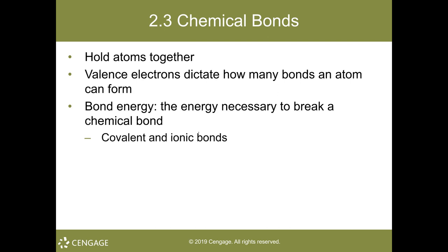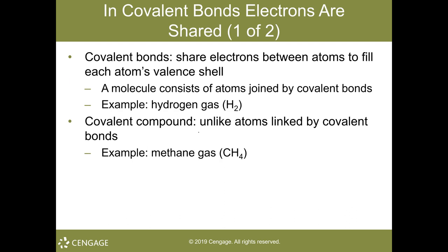It's chemical bonding that provides the way in which those atoms are held together. Bond energy is necessary to break a chemical bond, especially in the case of ionic bonding and the covalent bond. Let's begin with the covalent bond. The covalent bond is the strongest bond, and in covalent bonding it involves the sharing of electrons between atoms, so the valence shell is full.